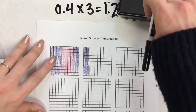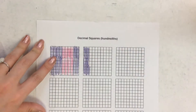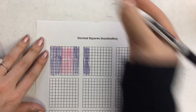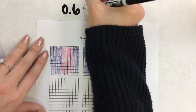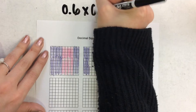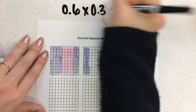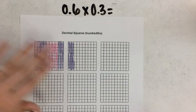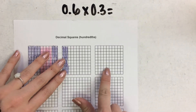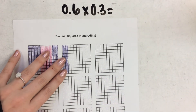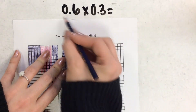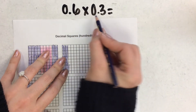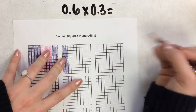So four tenths times three equals one whole and two tenths left over. Let's do another example. We're going to do a decimal number, six tenths, times another decimal number, three tenths, and we're going to use this square right here. We want to find the area of six tenths and three tenths.